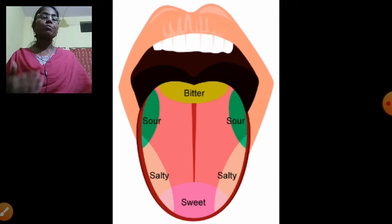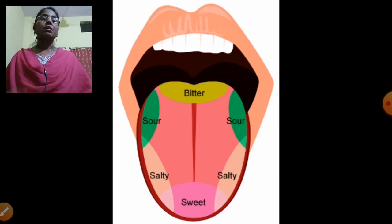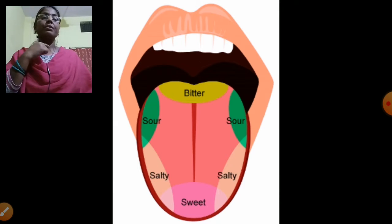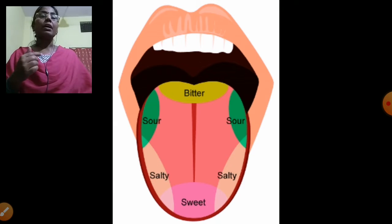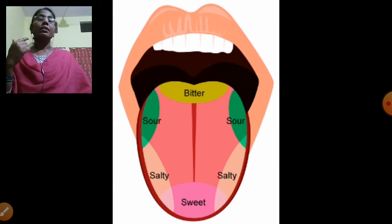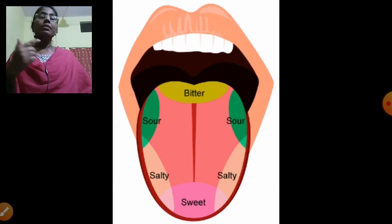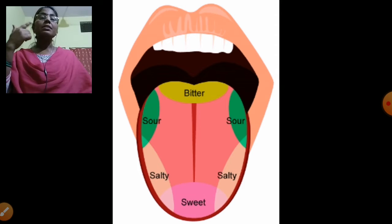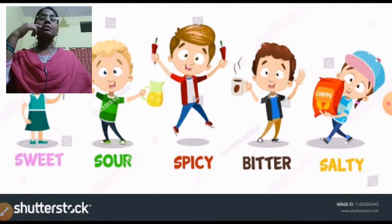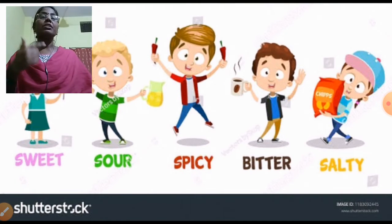The lower part of our tongue recognizes sweet, and the side recognizes salty, then sour, and last, the upper part is bitter.